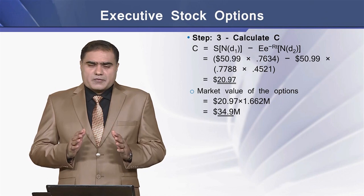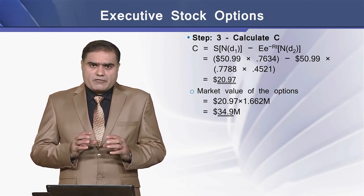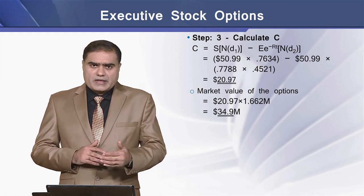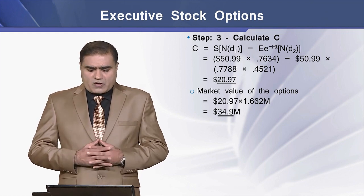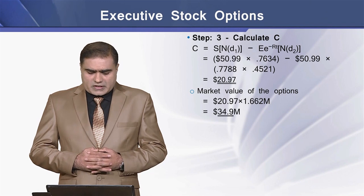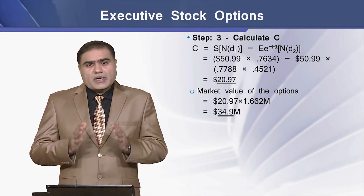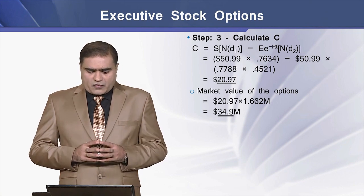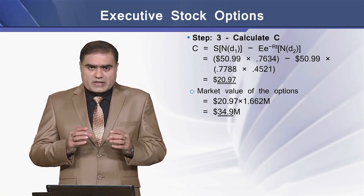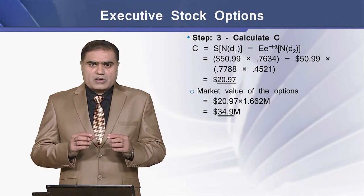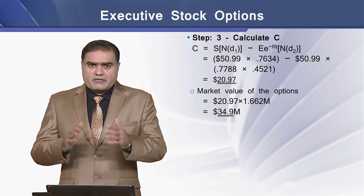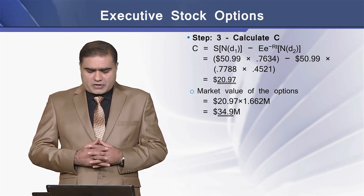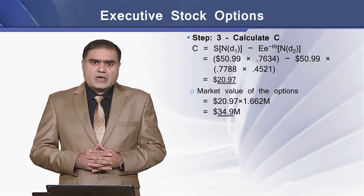In step 3, we have computed the required values and using these values in the Black-Scholes model, we can determine the value of this option, which is $20.97 per share. Since there are 1.662 million shares granted to the executive as the option, the total value of this option comes to $34.9 million.